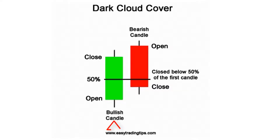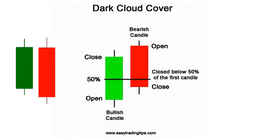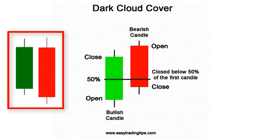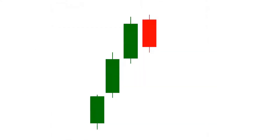The first candle of the dark cloud cover is a bullish candle opening near the low and closing near the high. The first candle must be a medium or large real body, but not very large. The second candle is bearish, opening near the high and closing near the low, and must close below the middle of the real body of the first candle. It looks similar to the bearish engulfing pattern, but the difference is that the bearish engulfing closes below the previous candle, while the dark cloud cover closes above the opening price of the previous candle.